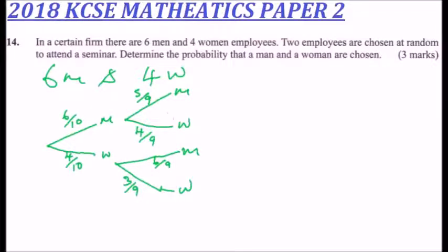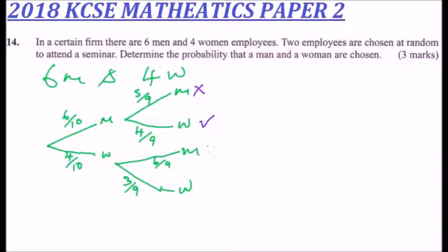Since we only need to choose one man and one woman, we can identify the valid outcomes. Man then man is crossed out. Man then woman is valid. Woman then man is valid. Woman then woman is also crossed out.